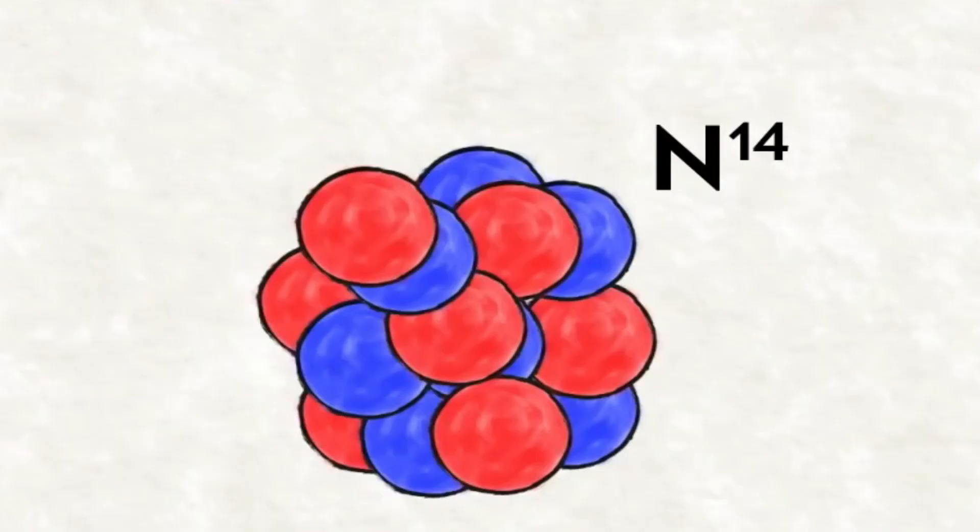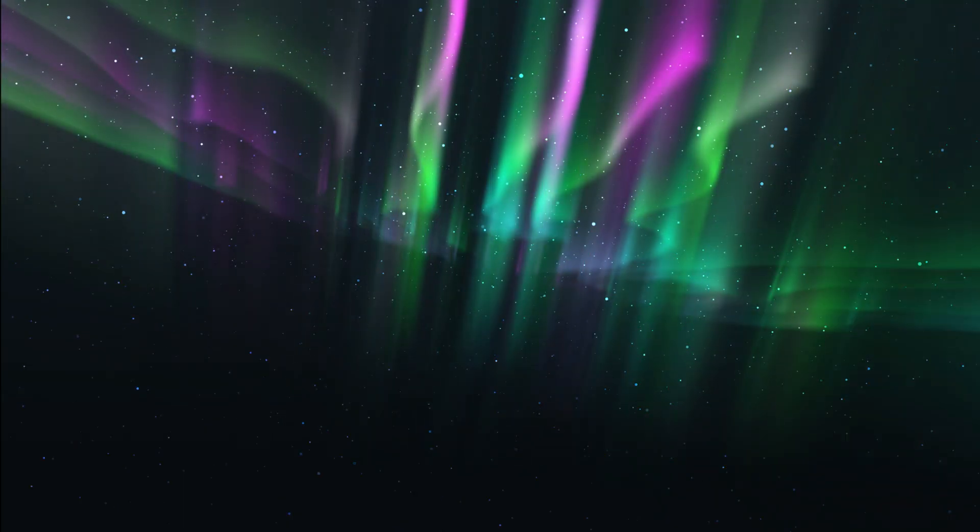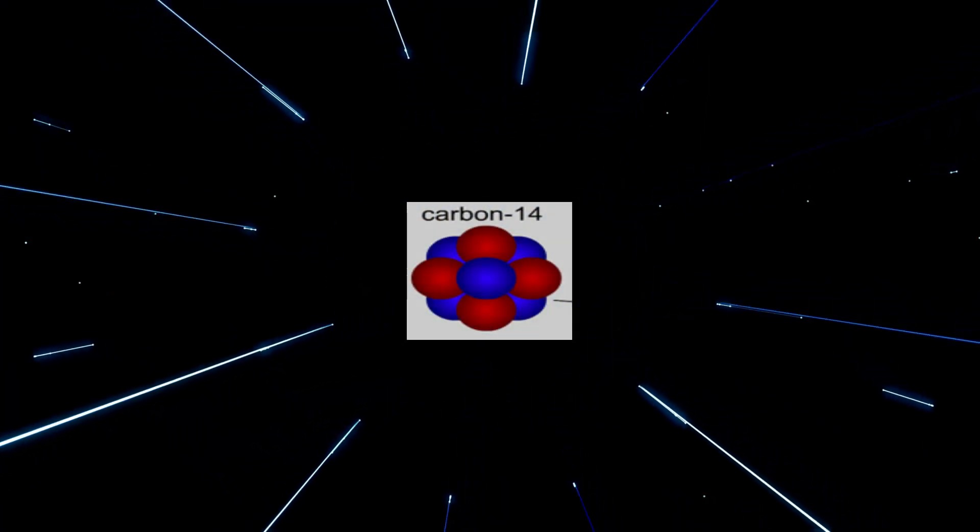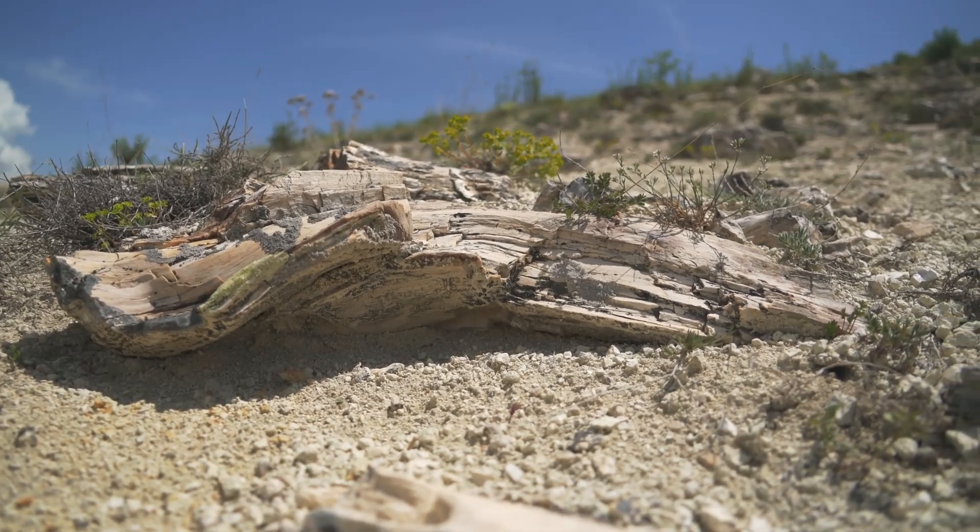When cosmic rays enter the atmosphere, they interact with local nitrogen atoms to kick off a nuclear reaction that produces radiocarbon. Since cosmic rays constantly stream through space, Earth receives a more or less steady supply of radiocarbon. If you know where to look, you will find radiocarbon. For example, some of this can be found naturally in tree ring fossils.